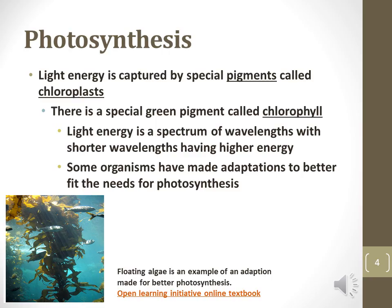Carbon dioxide and water are the reactants, opposite of cellular respiration. Light energy is captured and stored by a special pigment called chlorophyll. These photosynthetic organelles use the chemical enzyme chlorophyll to reduce carbon dioxide with water to store energy in the covalent bonds of glucose.